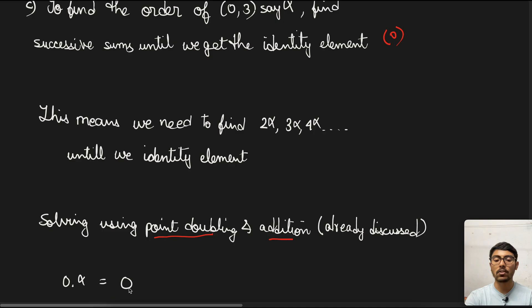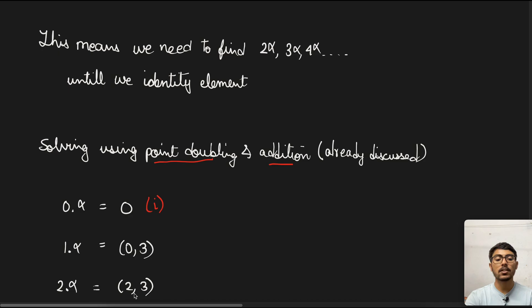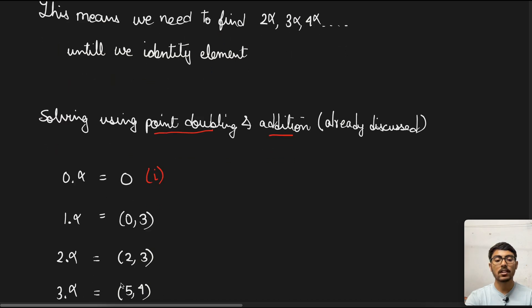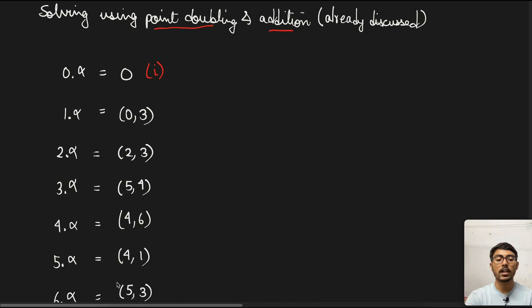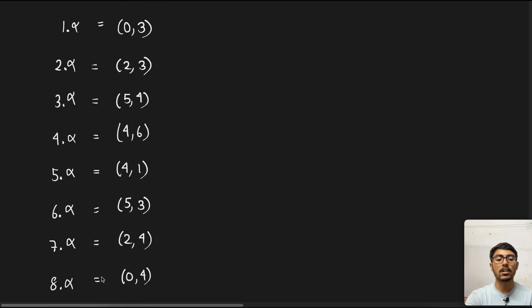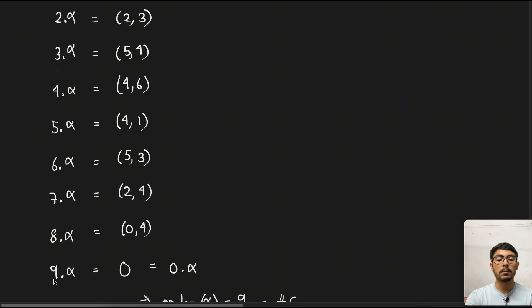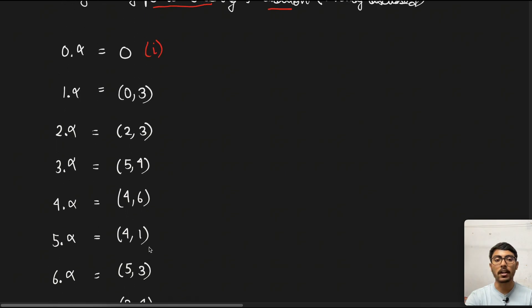0 times alpha is O, which is the identity element. 1α = (0,3). 2α = (2,3). 3α = (5,4). 4α = (4,6). 5α = (4,1). 6α = (5,3). 7α = (2,4), and so on. But in the last element you see 9α becomes O, which is the identity element that we have in the first part.